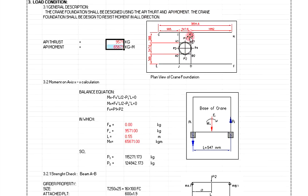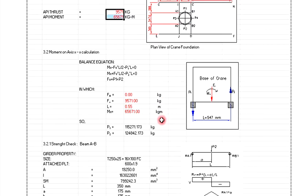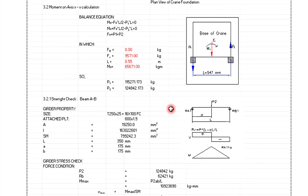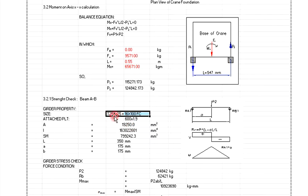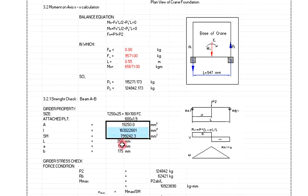We normally use a T-beam underneath the main deck. The T-beam size must be double-checked for every point and location. You also need to check the area, inertia, and initial section modulus based on the profile length. For example, beam A to B uses 250×25 plus a flange of 100×16.